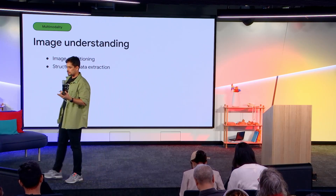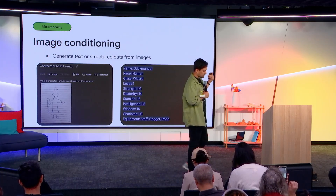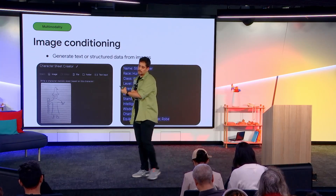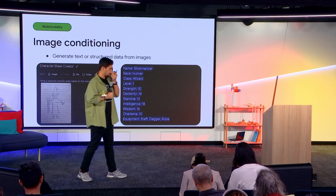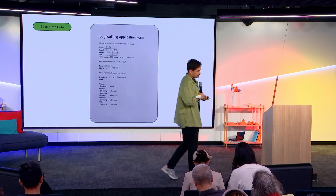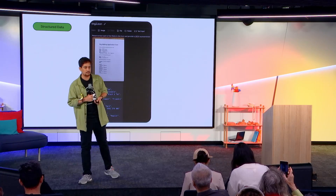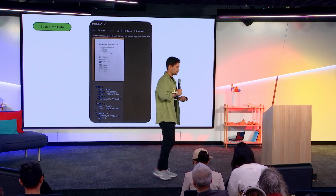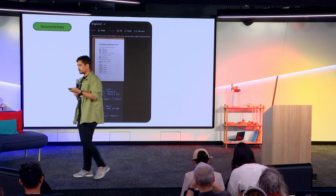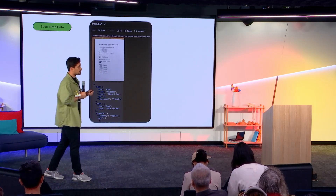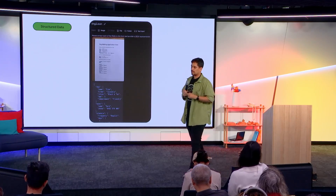Images can be used to condition your prompt better or to get structured data extraction and save some time. For example, if you give an image and ask it to generate a character sheet, you get something out — useful if you play RPG games, so you can quickly iterate through your character building. We also have a filled form with handwritten text — we ask Gemini to extract information from it in JSON format and it gives a nice structure. If you do few-shot prompting and give it an example of what JSON structure should look like, it'll give you results in that structure.